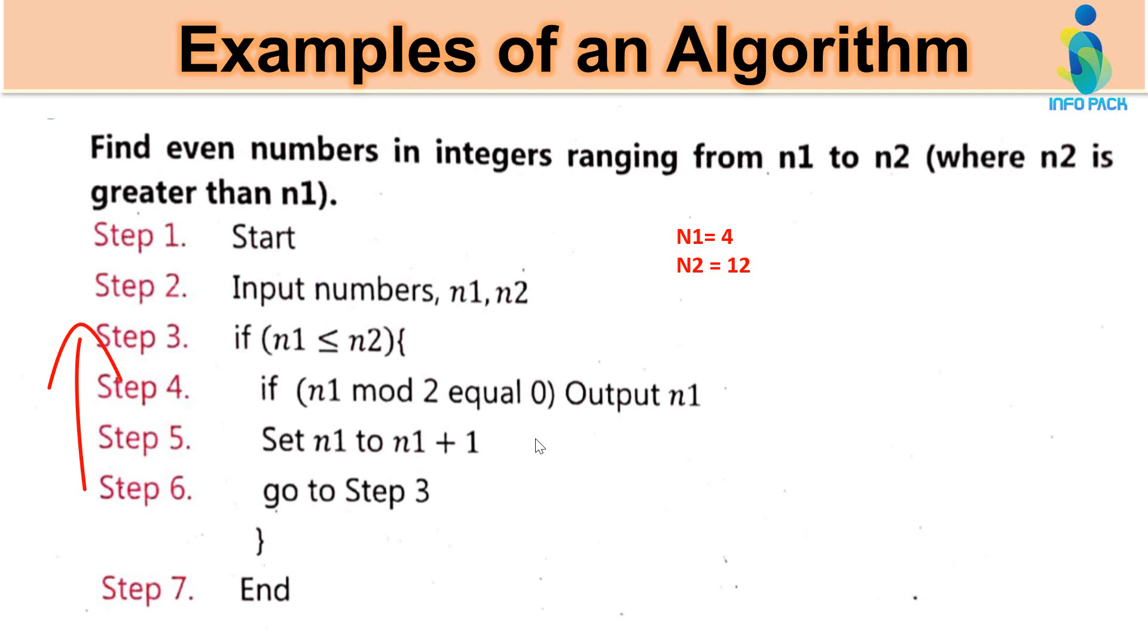Step 3 will check again. Now what will be stored in n1? 5. 5 is less than n2, 5 is less than 12. Yes, condition is true. Again take the mode of 5. If this is equal to 0 then output, otherwise move towards step 5. So step 3, 4, 5, 6 has a loop here. And what will be stored in step 7? End of the algorithm. So here are the algorithm examples.